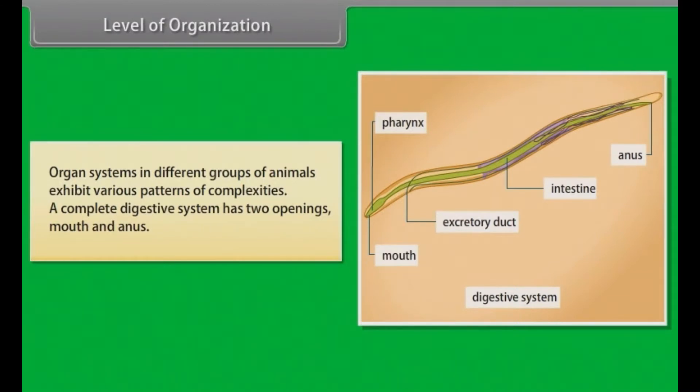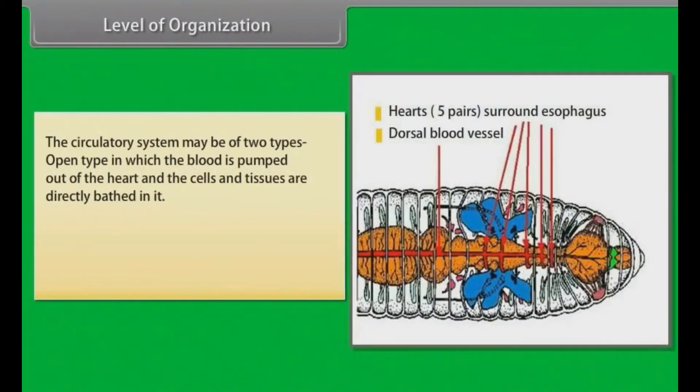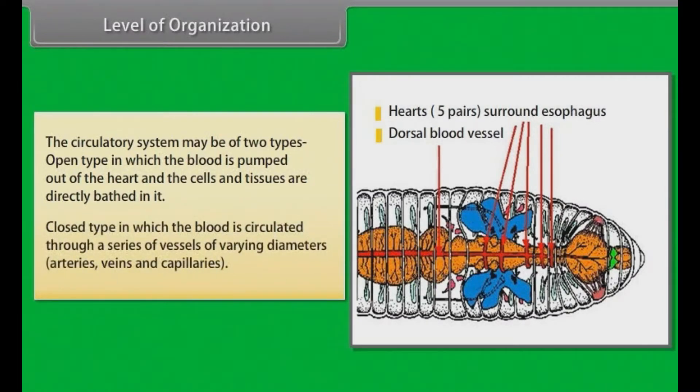A complete digestive system has two openings, mouth and anus. For example, the digestive system in platyhelminthes has only a single opening to the outside of the body that serves as both mouth and anus and is hence called incomplete. The circulatory system may be of two types: open type in which the blood is pumped out of the heart and the cells and tissues are directly bathed in it, and close type in which the blood is circulated through a series of vessels of varying diameters, i.e. arteries, veins and capillaries.